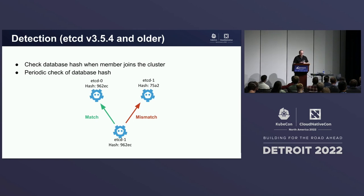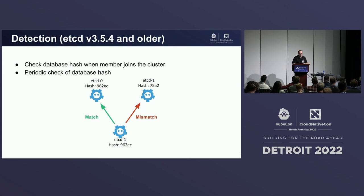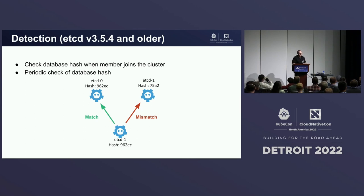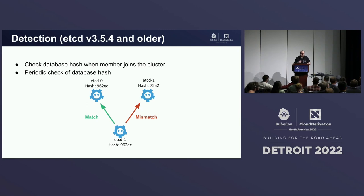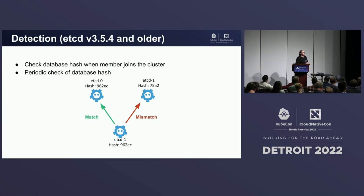etcd has methods to protect against inconsistency. Up to version 3.5 there were two methods, and the newest version introduced a new one. Both methods are not enabled by default, but if you enable them etcd will check the database hash when a member joins a cluster, preventing inconsistent members from joining. The second method is a periodic check — etcd will ask other members for the hash of a specific revision, and if there's any discrepancy, etcd will raise an alarm and notify administrators to investigate.